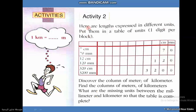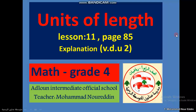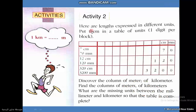Activity two: here are lengths expressed in different units — put them in the table of units, one digit per block. For example, seven centimeters: I put 7 in the centimeter column and 0 in the millimeter column, giving 70 millimeters. So seven centimeters equals 70 millimeters — the centimeter column represents tens of millimeters.